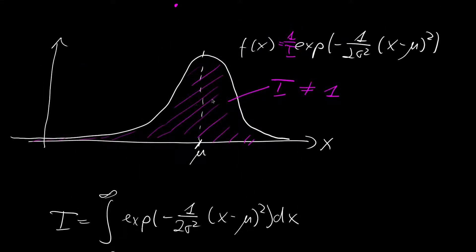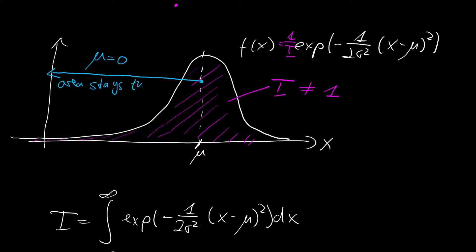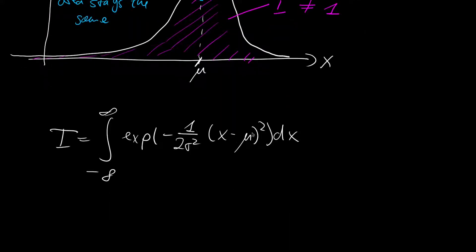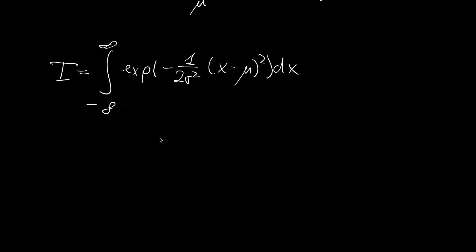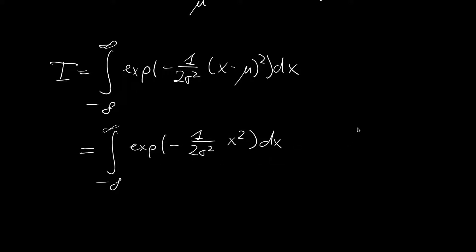Let us think about the distribution before we continue. If we shift the distribution to be centered around 0 — making mu equal to 0 — the area under the curve stays the same, so our I does not change. This simplifies the derivation, so we can just set mu to 0. Then I equals the integral from minus infinity to plus infinity of the exponential of minus 1 over 2 sigma squared times x squared, dx. The classical strategy is to find the antiderivative, but there is no clear antiderivative for this function, so we can only solve this integral by a trick.